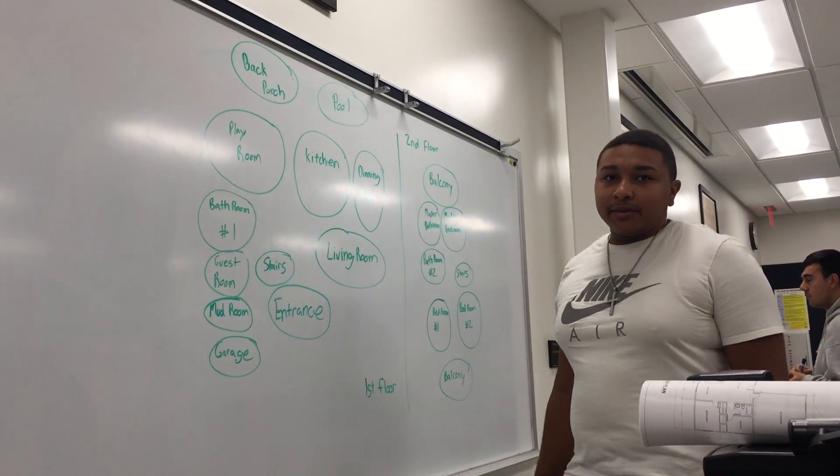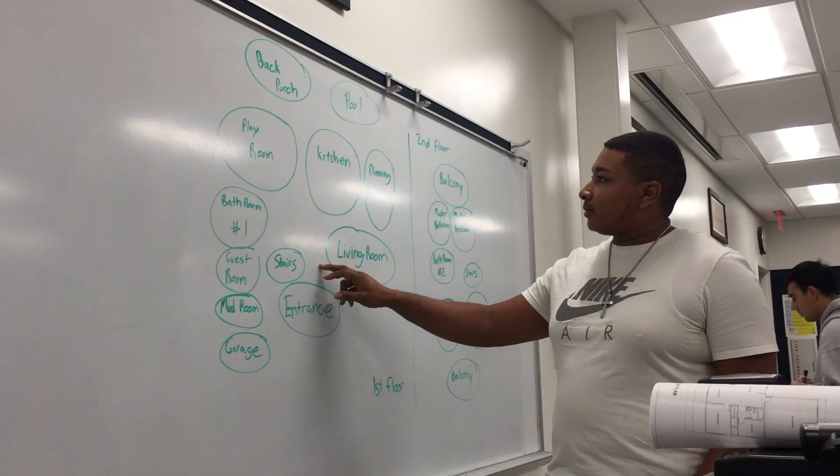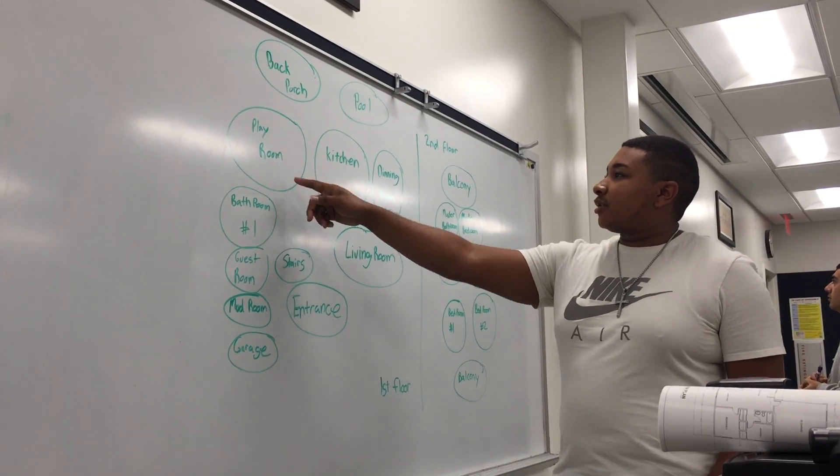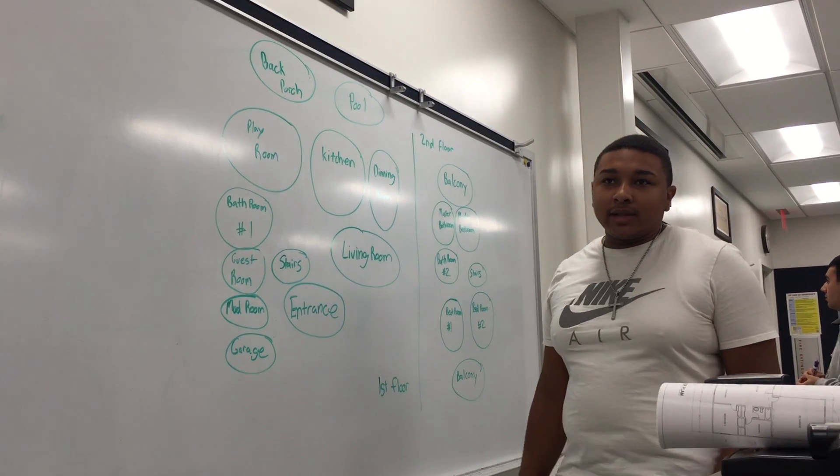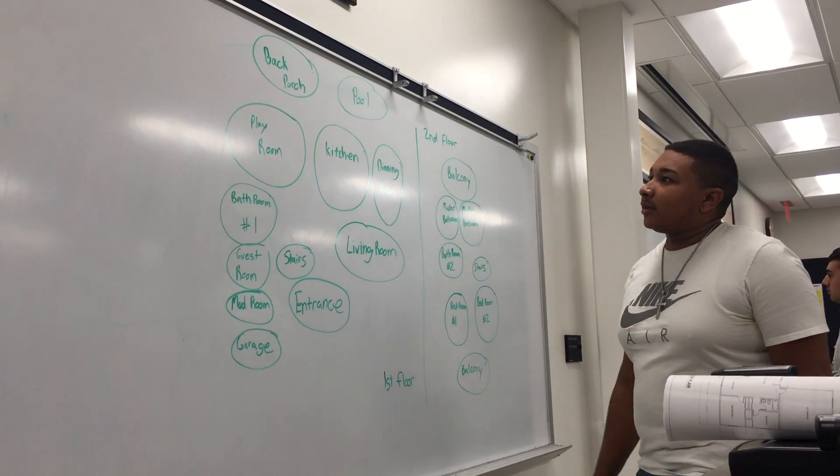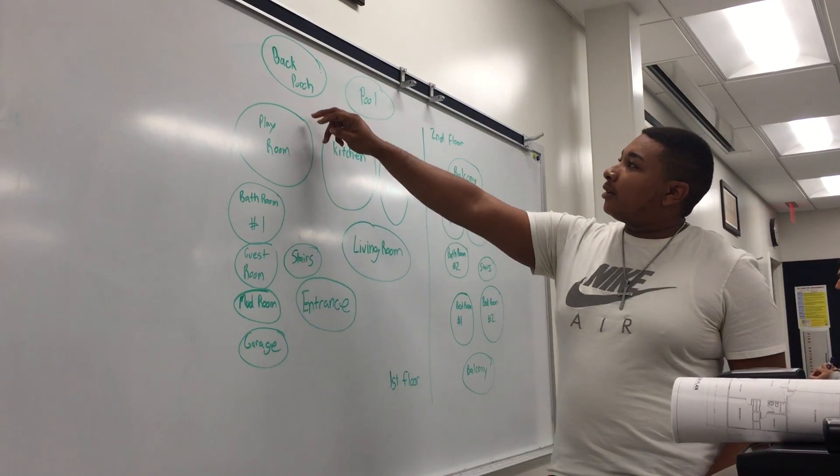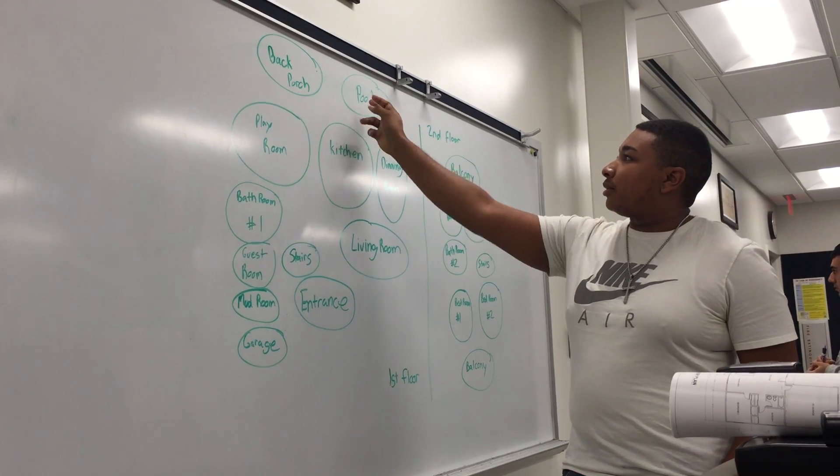Next to the kitchen is the dining room. Then there will be the playroom where you can have a pool table to have a fun time with your friends. And then there's the back porch outside with the pool.